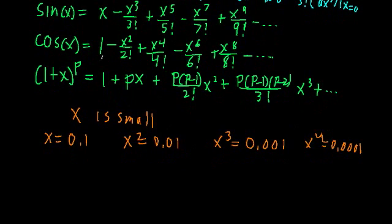So when x is small, sine of x, we can neglect all these higher order terms like x cubed, x to the fifth, x to the seventh, etc. And we can say that sine of x is approximately equal to x when x is small.